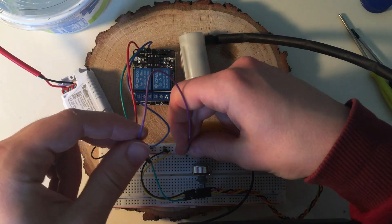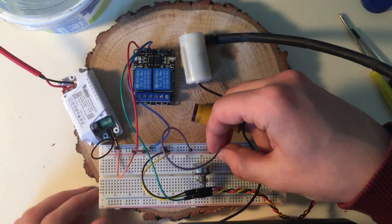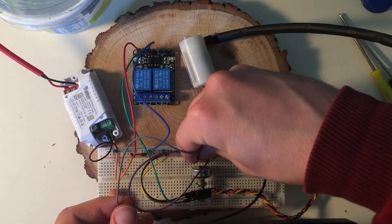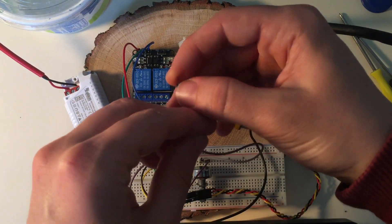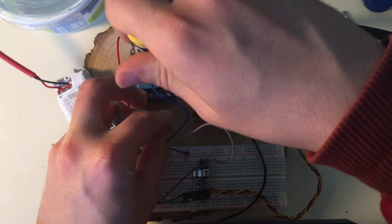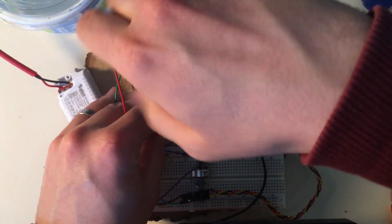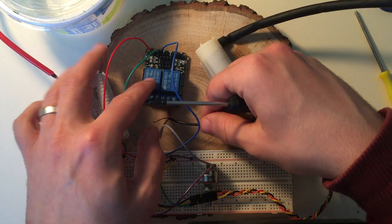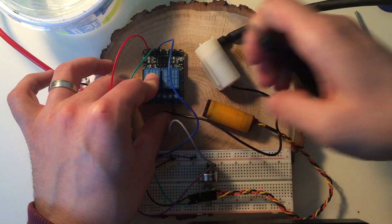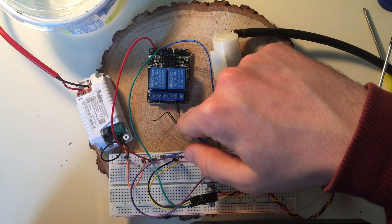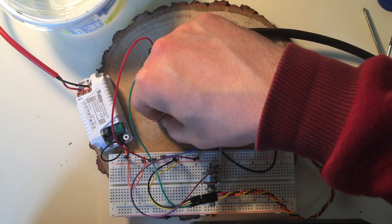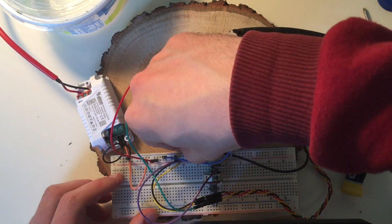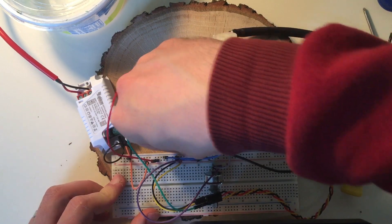I am connecting 5 volts to the rightmost pin of the potentiometer and I connect the middle pin of the potentiometer to the common pin, the middle pin of the relay output. In the next step I will connect the red wire to the normally open pin of the relay module. Then I will connect the black wire of pump to the zero volts. And that's it, let's give it a try.